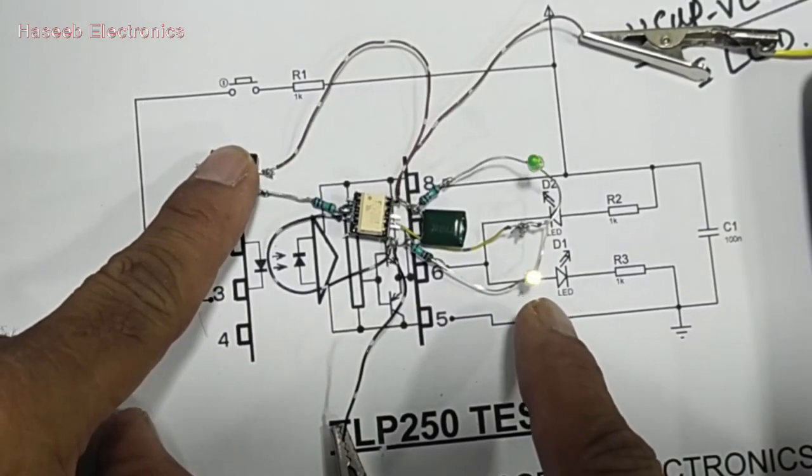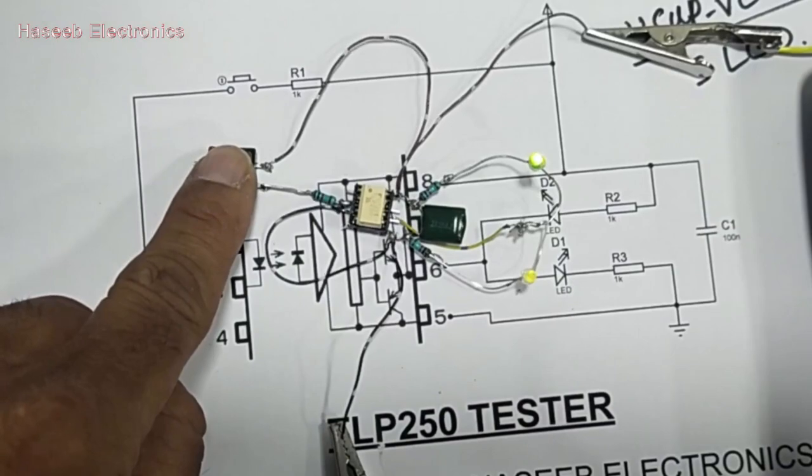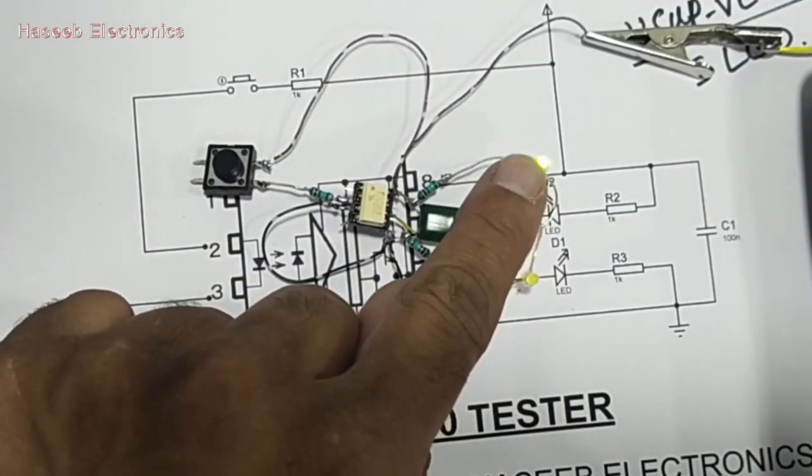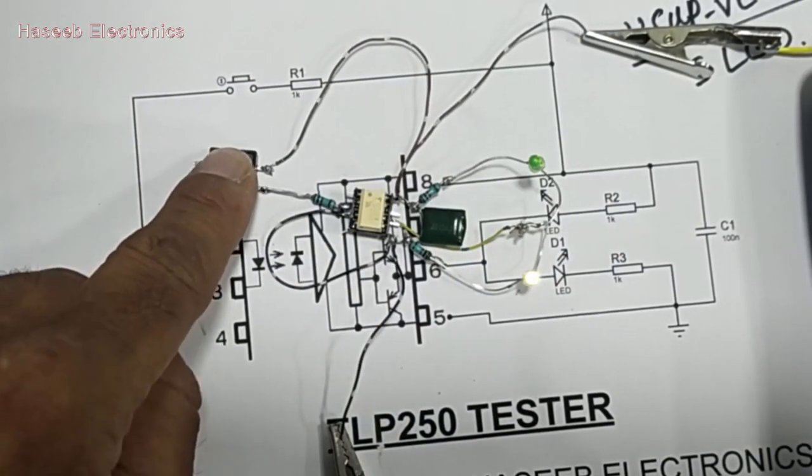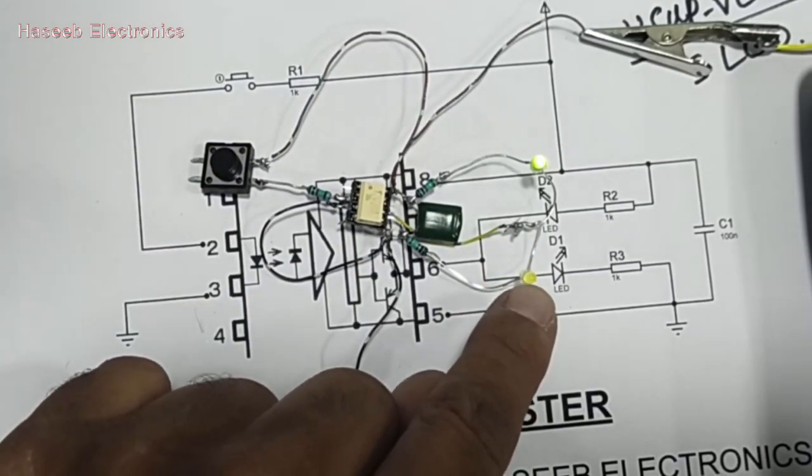Press the button - LED will shift. This LED is shifting so this optocoupler is good. In off condition the top LED must be on. In on condition when we turn on, the lower side LED must be on.